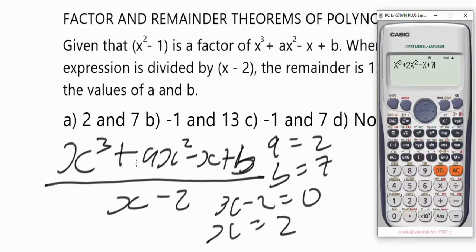Now that we have represented the polynomial — this is the cubic polynomial — having stored x as two, let's press equals and see if we are going to get 15 as our output. The result is 21. So the values of two and seven when used to replace a and b did not give a remainder of 15.